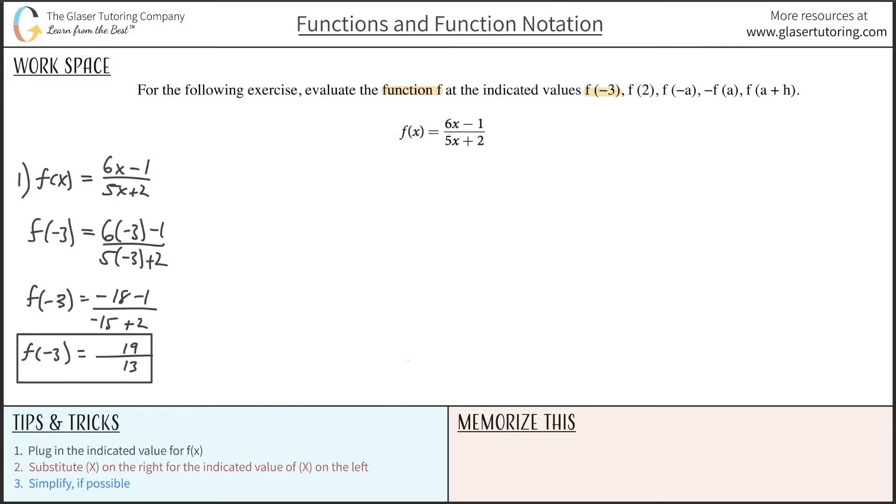Let's do it for number 2. Okay, so number 2 now, again, rewrite it. So f of x is equal to 6x minus 1 all over 5x plus 2. Now they want us to evaluate it at f of 2. No worries. So f of 2, we substitute f of x for now f of 2. And everywhere on the right-hand side, now you're going to plug in a 2. So 5 times 2 plus 2.